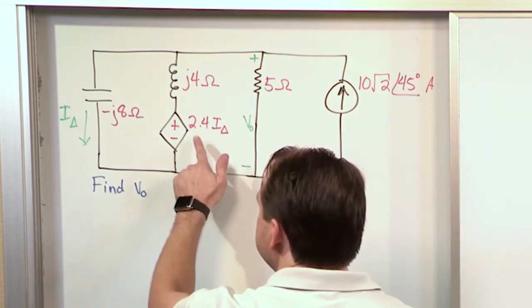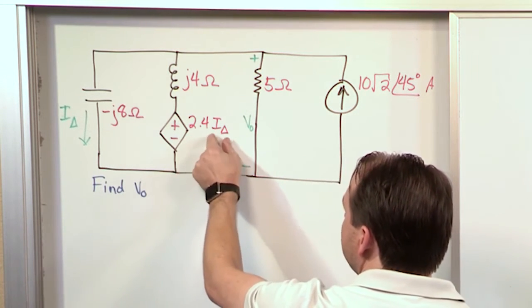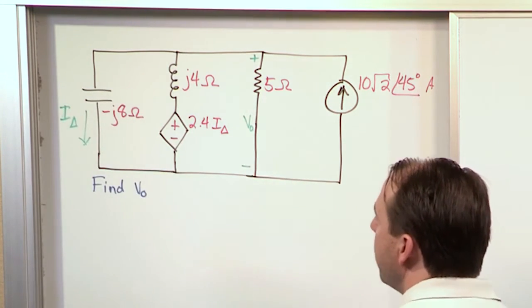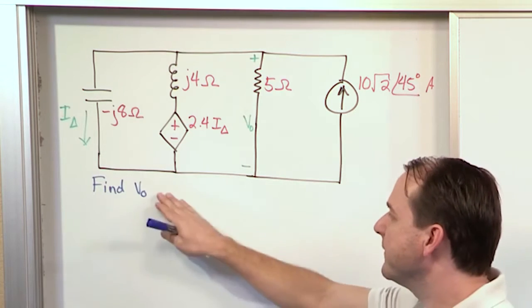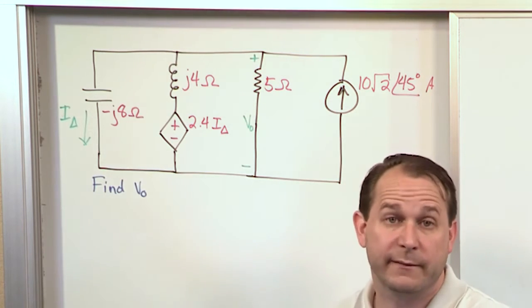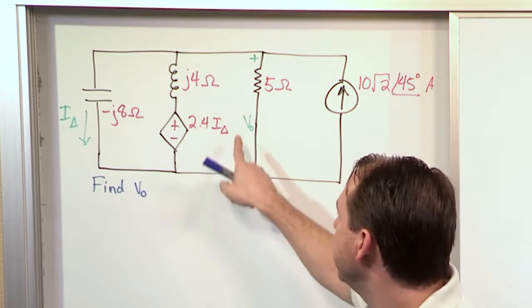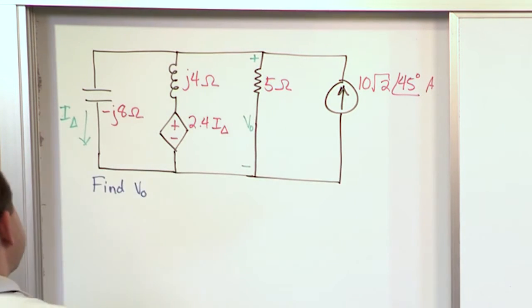All right. Now this voltage source is 2.4 times I delta, where I delta is defined to be coming down through this capacitor. And what we want to do is find V naught. Now it doesn't say use node voltage method, but since I'm teaching you node voltage, we're going to use node voltage method to find this voltage which is labeled here. So when we look at it, we start thinking: what are our nodes? What nodes are we going to use?